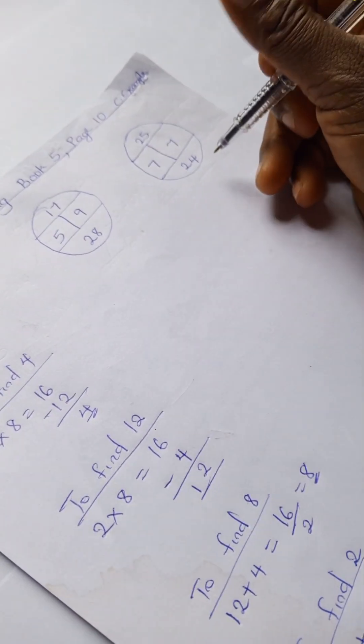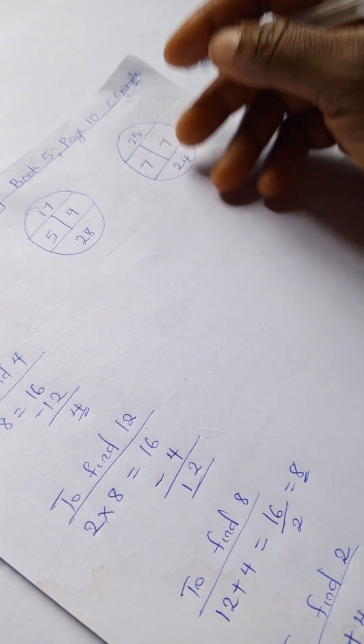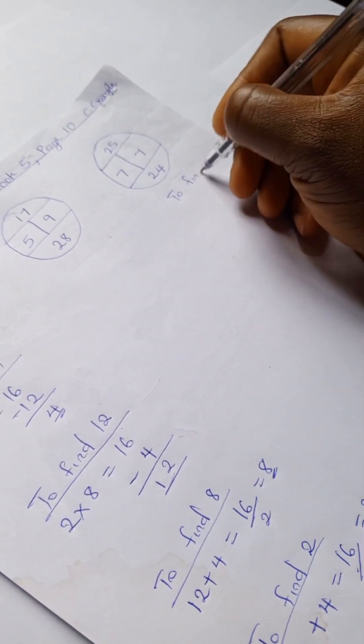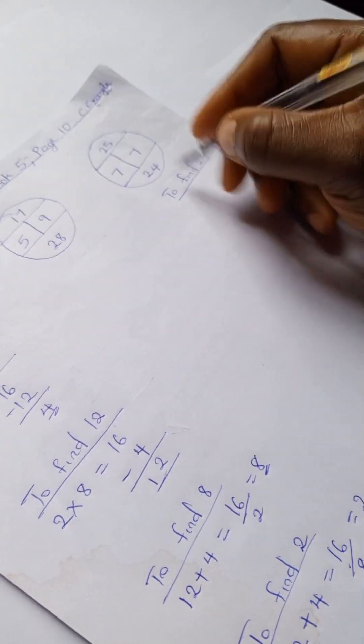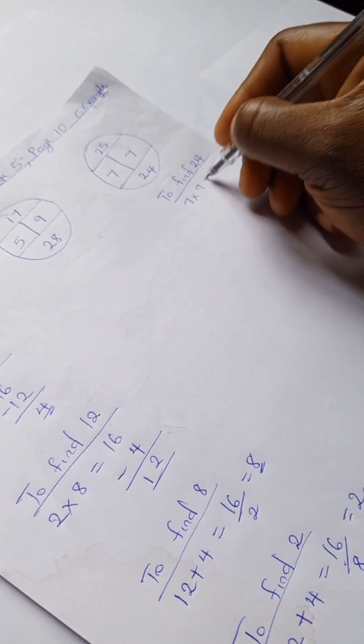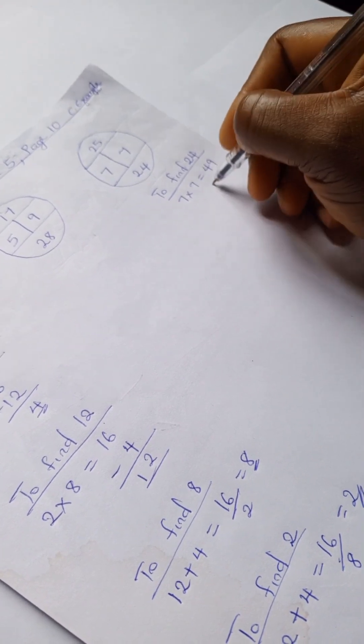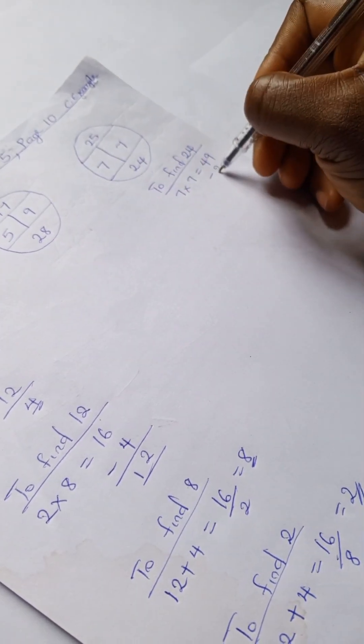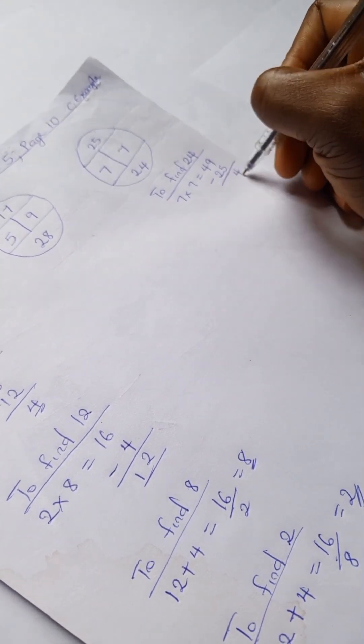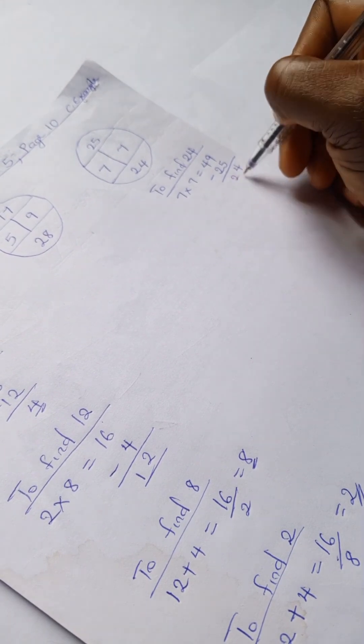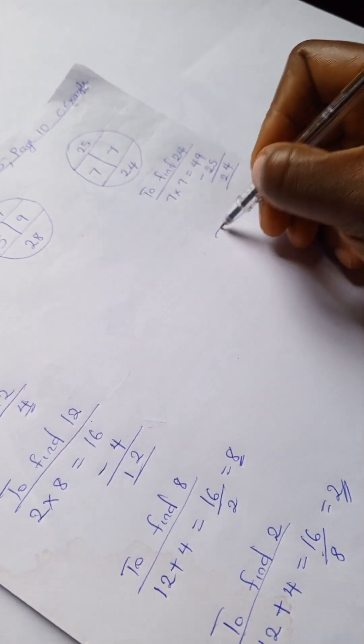Okay, so let's go ahead. To find 24, we have 7 times 7 is 49. 49 minus 25... 9 minus 25, 9 minus 5 is 4, and 4 minus 2 is 2.